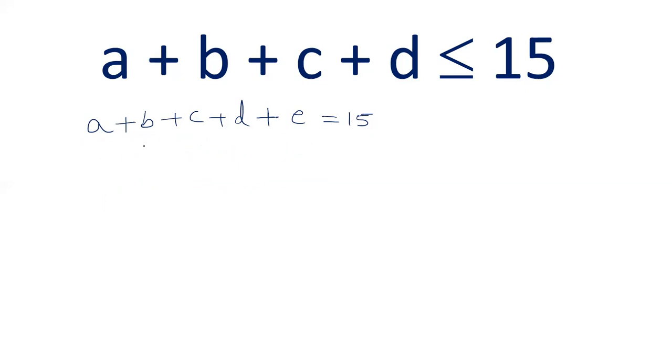And in this case, whenever we have the sum of variables is a constant value, and the values are non-negative integral solution where 0 is possible, in that case the formula is n plus r minus 1, c, r minus 1.